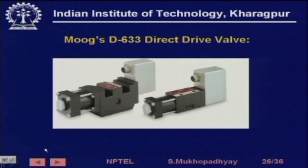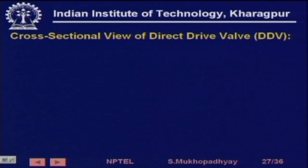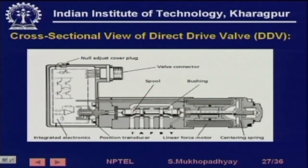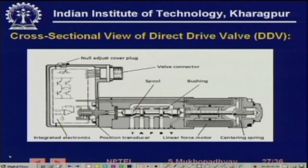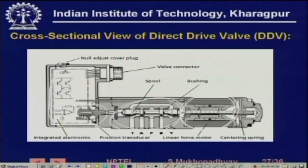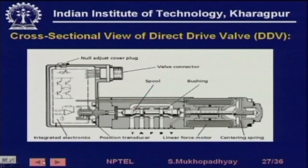Moog is a company which is a very well-known manufacturer of such valves — this is just a picture from their website. This is a cross-sectional view of a direct drive valve. You can see the various parts: this is the electronics, this is the actual valve, and this is the coil which will pull the spool. Here is the position sensor, which is typically an LVDT. You sometimes have a spring here. These are very compact devices.